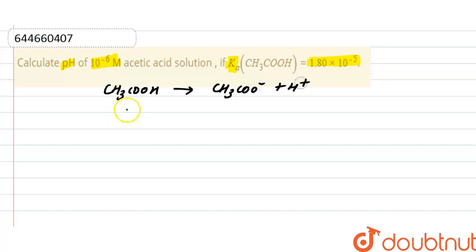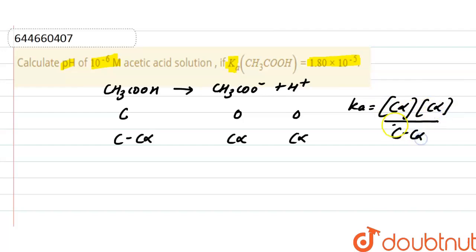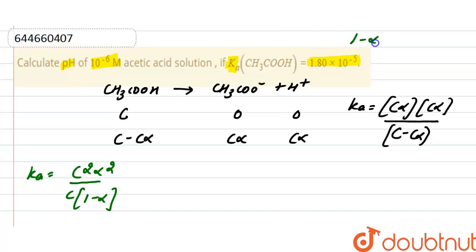Consider the concentration of acetic acid as C initially, and the concentration of H⁺ ion and acetate ion is 0 initially. After some time, the acetic acid dissociates and converts into products. The acid dissociation constant Ka can be written as concentration of the products divided by concentration of the reactant. After rearranging, we get C squared alpha squared divided by C times (1 minus alpha), and since 1 minus alpha is approximately equal to 1, this simplifies to C·alpha squared.